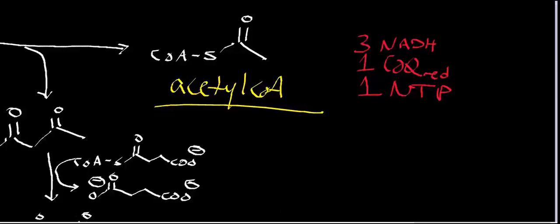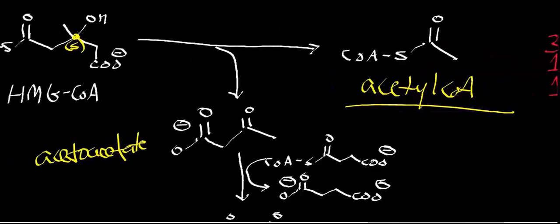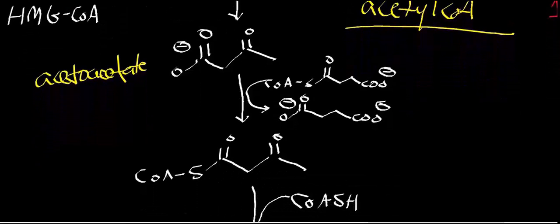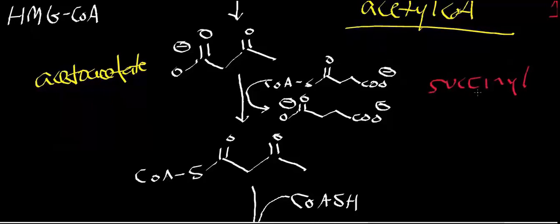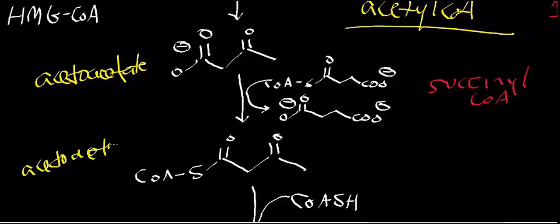Now let's think about what we can do with acetoacetate. Acetoacetate can react with 3-ketoacyl-CoA transferase. In this reaction, succinyl-CoA is used as the coenzyme A donor, and you end up with acetoacetyl-CoA. In the process, we generate succinate.